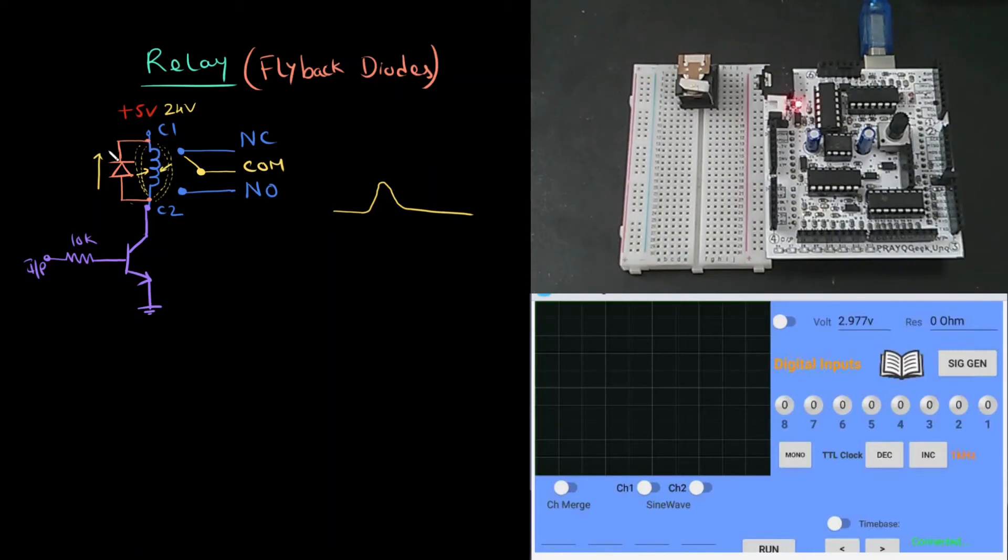Please note that during normal operation, this diode is reverse biased and it has no influence on the circuit. This flyback diode comes into picture only when we turn off the relay and there is a voltage spike.